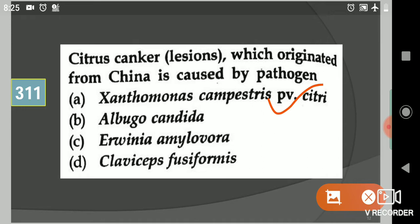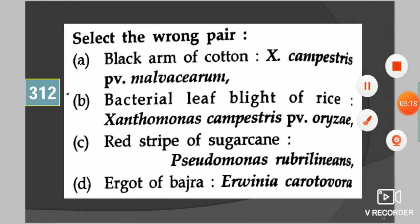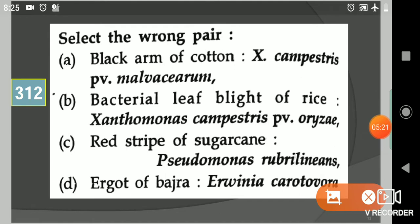Come to the next question: Select the wrong pair. Your options are black arm of cotton is due to Xanthomonas campestris pv. malvacearum, bacterial leaf blight of rice is due to Xanthomonas campestris pv. oryzae, red stripe of sugarcane is due to Pseudomonas rubrilineans, and ergot of bajra is due to Erwinia carotovora. Your answer is ergot of bajra, fourth option. This is not caused by this. This is the wrong pair, and the rest of the three above are correct.